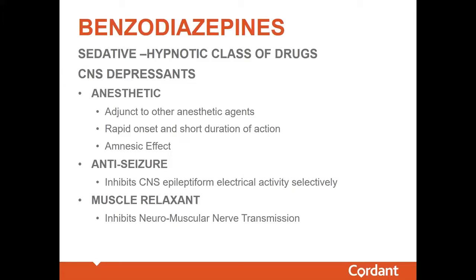Some of the benzodiazepines are also used for their anti-seizure effect, like clonazepam or Klonopin. It is often used in the treatment of certain seizure disorders because these drugs can inhibit central nervous system epileptiform electrical activity very selectively. They can also be used as a muscle relaxant, because the benzodiazepines can inhibit neuromuscular nerve transmission. So people who are tense or have muscle aches, the benzos can be used for that as well.